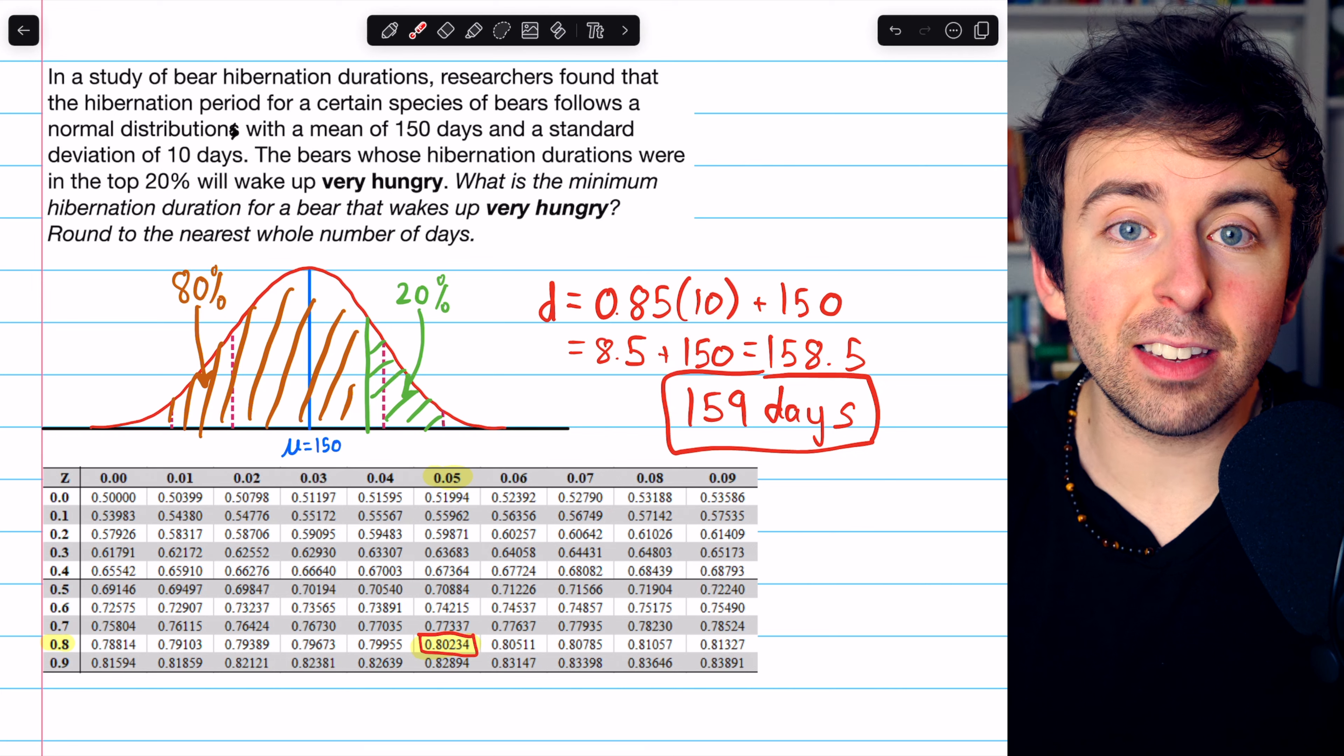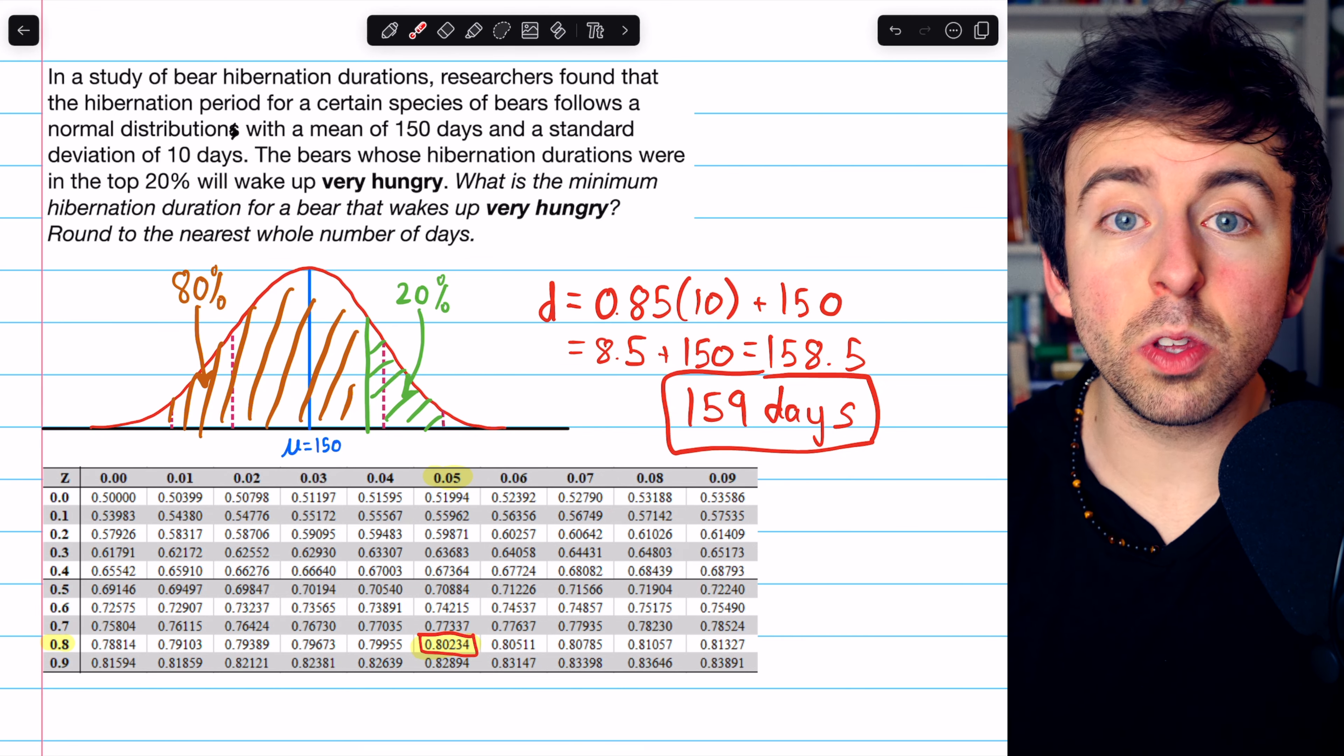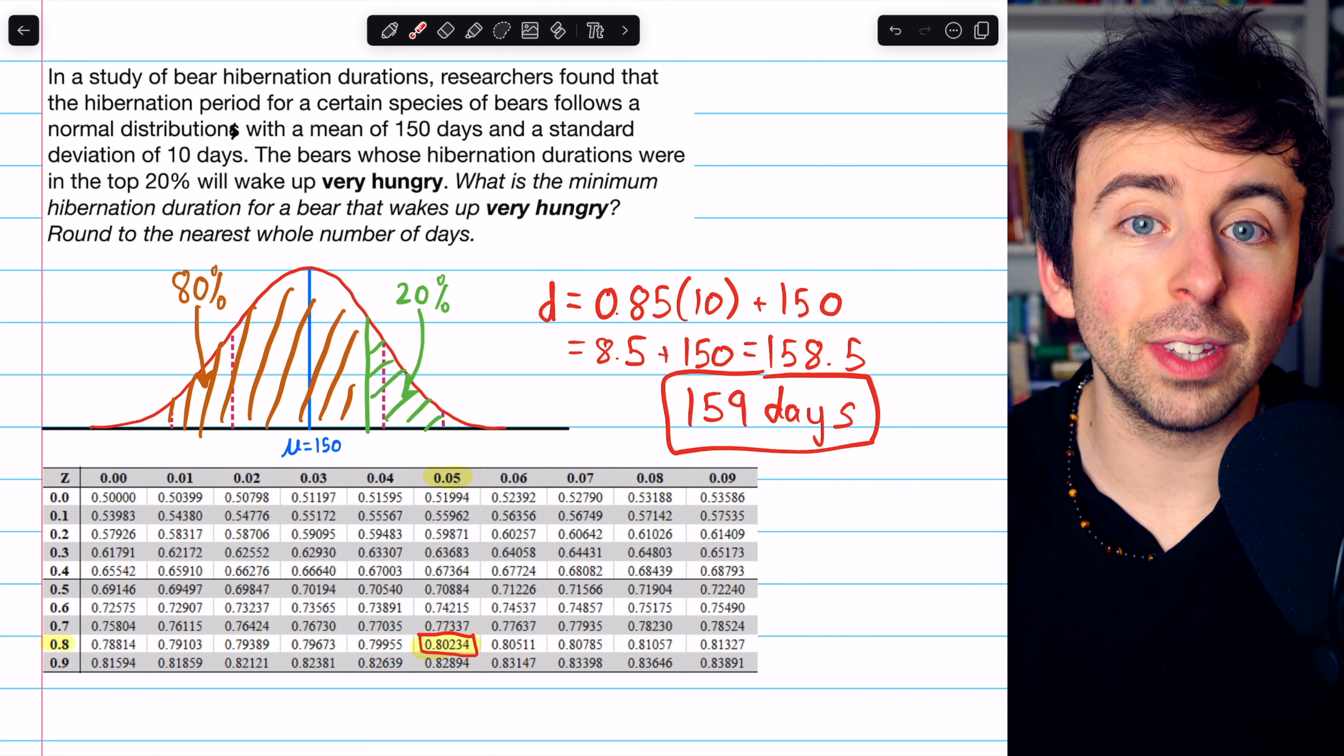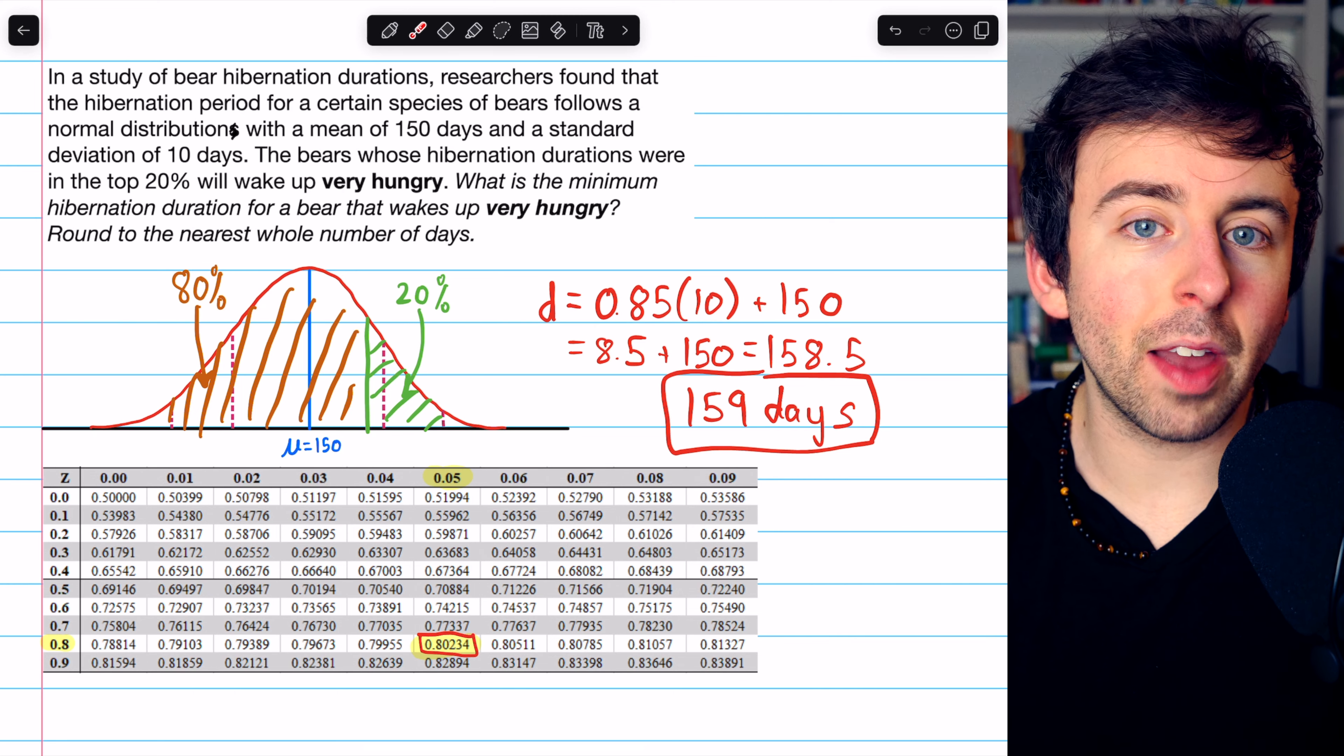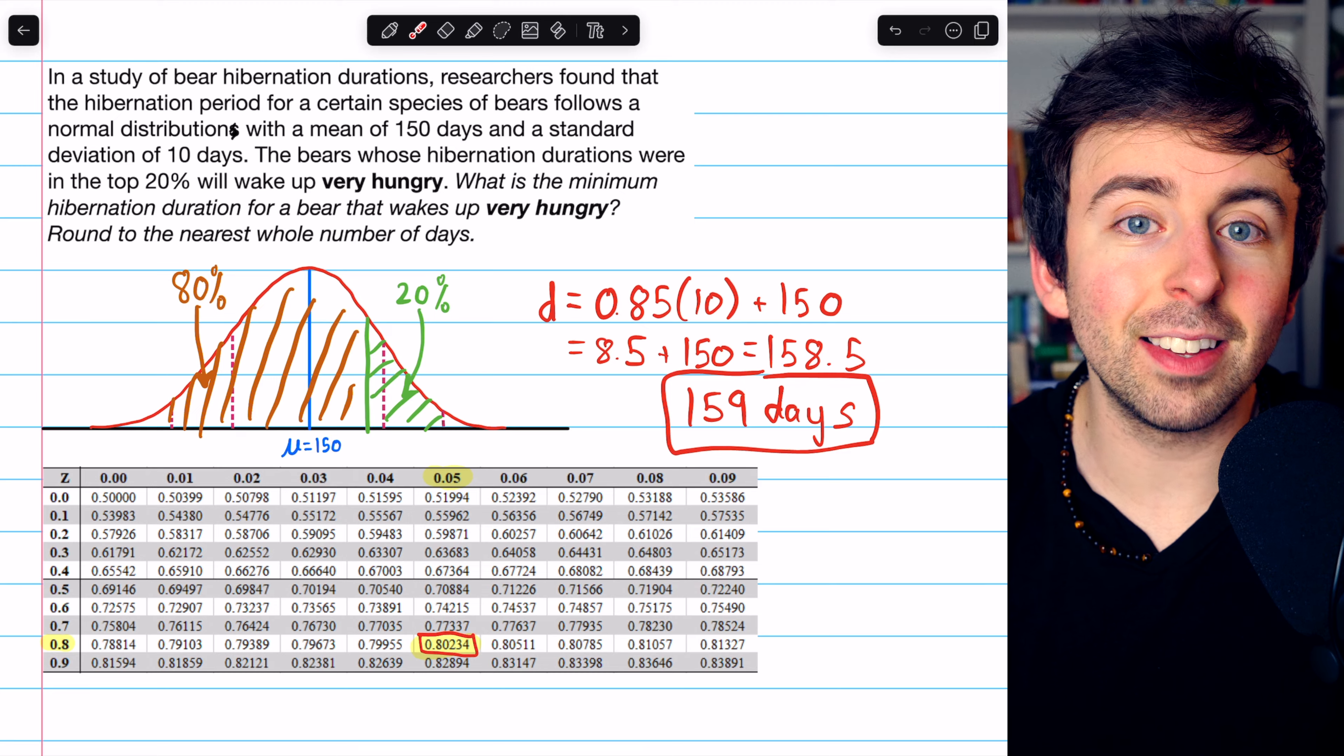Anyways, this is how you find a z-score from a percentile and how you use that z-score to find the actual data value at that percentile. Thanks for watching. Let me know in the comments if you have any questions and be sure to check out my statistics course and statistics exercises playlists in the description for more.